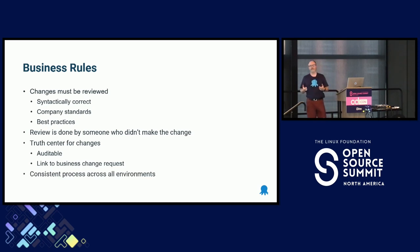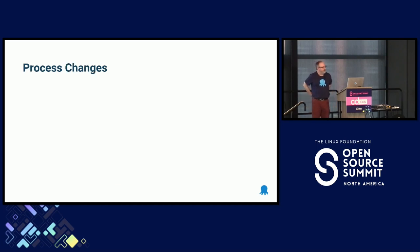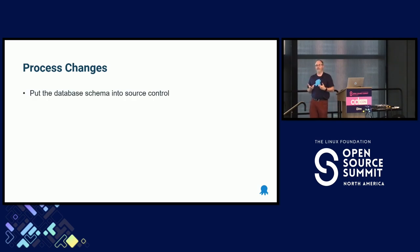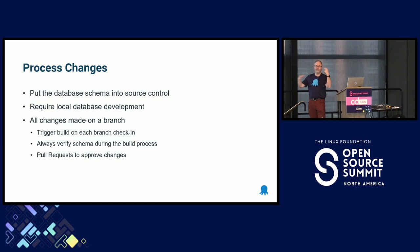We needed to have a consistent process across all our environments because by the time we would go to staging, we'd always run into headaches and it never worked out. So the process changes we came up with included putting the database schema into source control — not the actual database data itself — and requiring local database development. By doing that, we could leverage feature branches and get all the good stuff that comes with feature branches, such as pull requests.